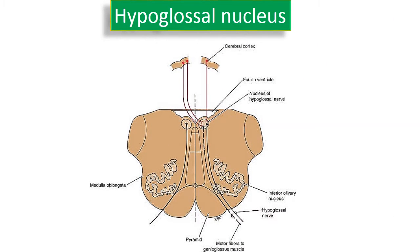The hypoglossal nucleus is located close to the midline in the lower part of the 4th ventricle in the medulla oblongata. It receives ipsilateral and contralateral innervation from the cerebral cortex. The fibres going to the genioglossus receive predominantly contralateral innervation.